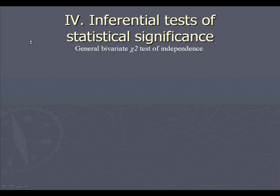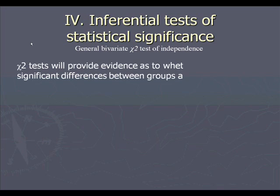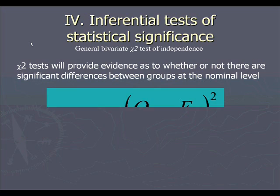What you're about to see will eventually take you through one specific example. And it tries to take you through step by step so that if you're doing this at home, you can follow right along. Chi-square tests will provide evidence as to whether or not there are significant differences between groups at the nominal level. Again, we're talking about categorically measured variables.